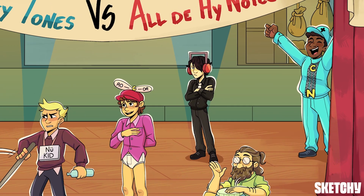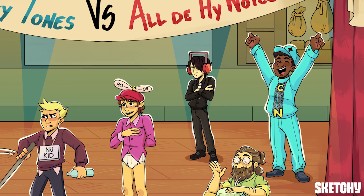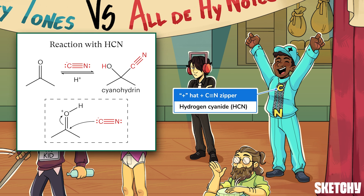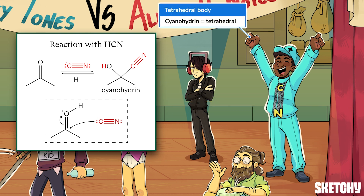Finally, let's see what happens when an aldehyde or ketone reacts with nasty nasty hydrocyanic acid, or HCN. We've represented the ultra-toxic hydrogen cyanide with this proud dad's plus sign hydrogen hat and his CN triple zipper jumpsuit that some might consider toxic to their fashion sensibilities. When HCN reacts with an aldehyde or ketone, it forms a cyanohydrin product which contains a tetrahedral carbon, hence the tetrahedral arrangement of dad's arms and legs as he cheers for his son.